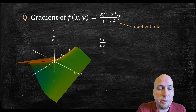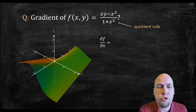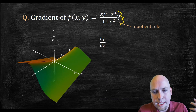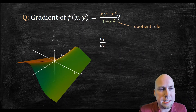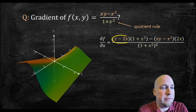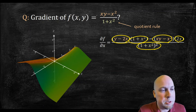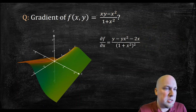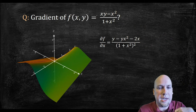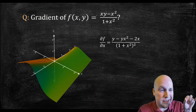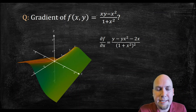For the x partial derivative, we need to use the quotient rule because there are x's both on the top and bottom of the fraction. We identify the top and bottom pieces and apply the quotient rule: derivative of the top times the bottom, minus the top times the derivative of the bottom, all divided by the bottom squared. Then we multiply out the brackets on top, collect like terms, and simplify — leaving the bottom unsimplified.